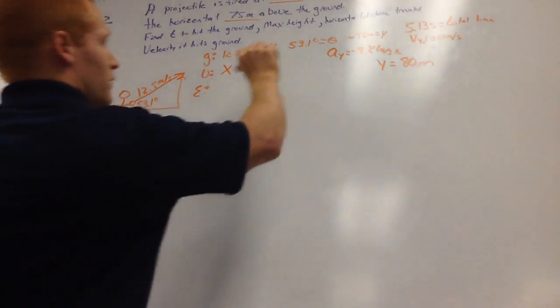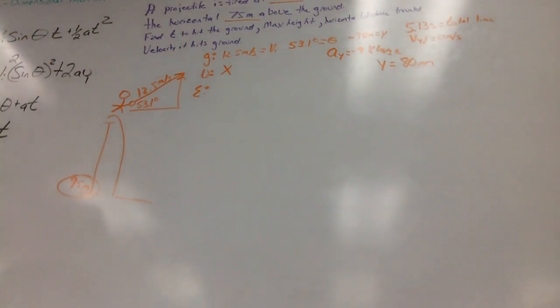So this time, part 3, we're going to find horizontal distance traveled. We have vi, we have theta, we have y, we have total time it travels.